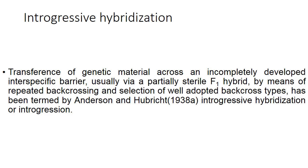Coming to introgressive hybridization, it is the transference of genetic material across an incompletely developed interspecific barrier, usually via a partially sterile F1 hybrid by means of repeated backcrossing and selection of well-adapted backcross types, as termed by Anderson and Hubricht in 1938. That is, introgressive hybridization, or simply interspecific hybridization.